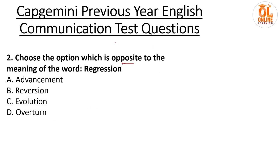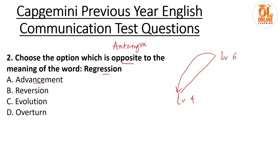Choose the option which is opposite to the meaning of the word 'regression.' Opposite means we have to find the antonym of regression. Regression is moving back — for example, going from level 6 back to level 4. That is called regression, like demotion. Advancement means moving from level 4 to level 6 — moving higher up. Reversion is similar to regression. Evolution means evolving step by step. Overturn means tipping something upside down. So these three cannot be the antonym, and the antonym is advancement. Answer is option A.